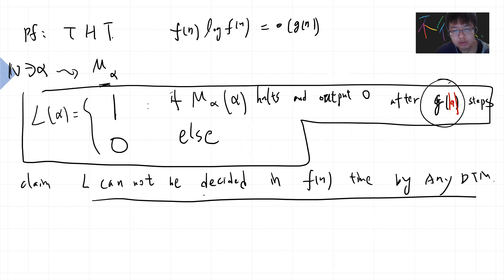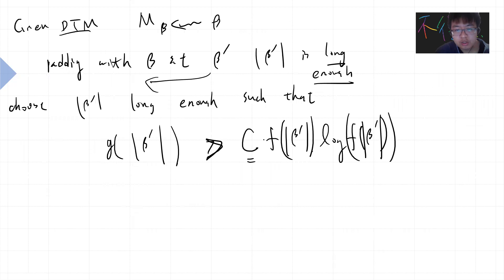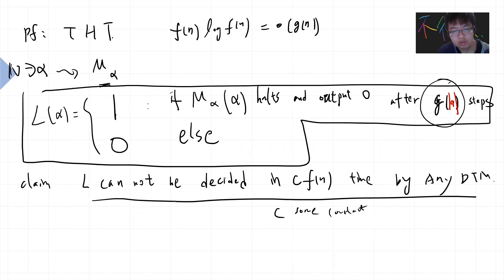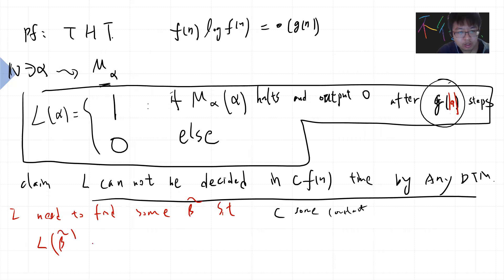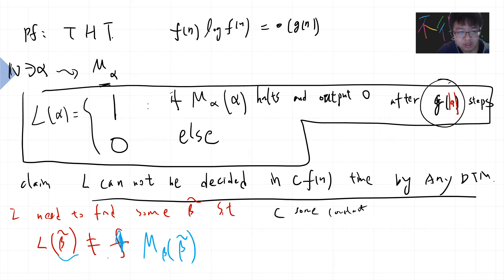More precisely: claim that L cannot be decided in c'·f(n) time by any deterministic Turing machine, where c' is a constant from the universal Turing machine. I want to claim that for any Turing machine M_beta, I can find some input beta-theta such that L(beta-theta) differs from what M_beta outputs on beta-theta. This is the goal — because I want to prove no such Turing machine exists, I need to find such a beta-theta.